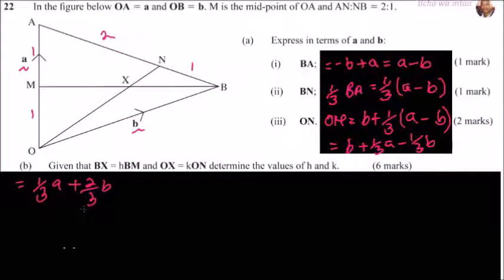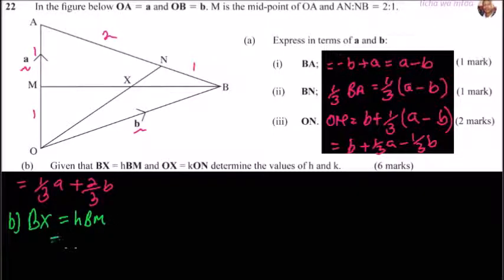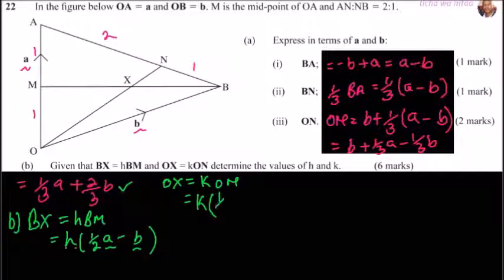Moving to part b. We are told that BX equals h times BM and OX equals k times ON. We need to determine the values of h and k. Since M is the midpoint of OA, BM equals one-half a minus b. For OX equals k times ON, we substitute ON to get OX equals k times (one-half a plus two-thirds b).